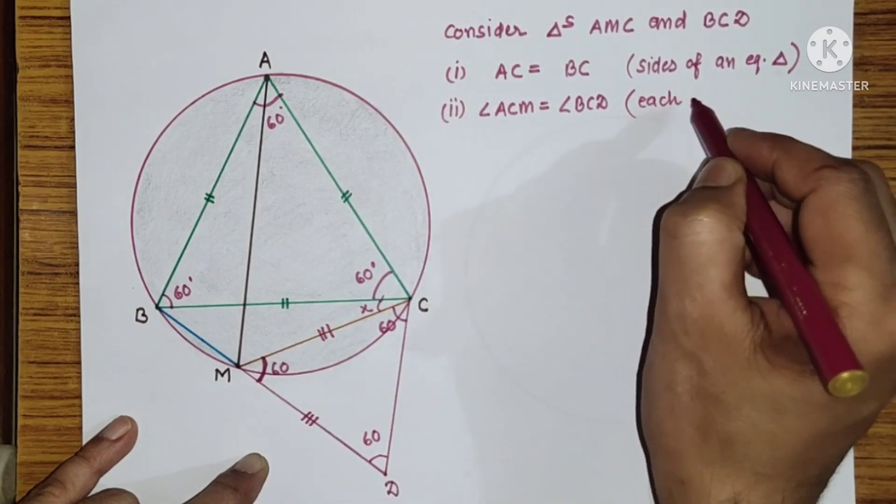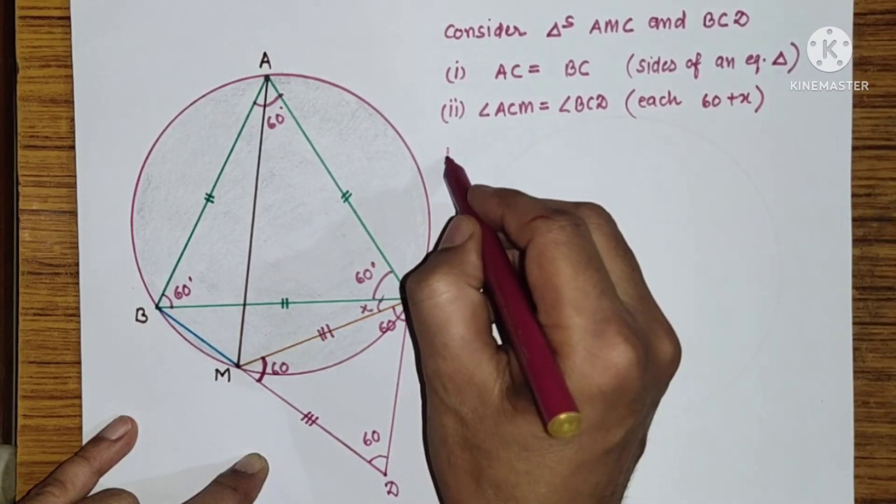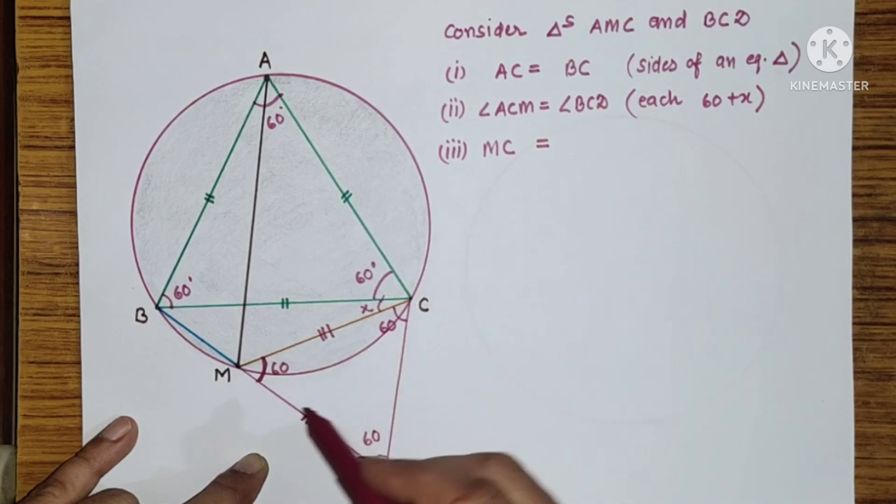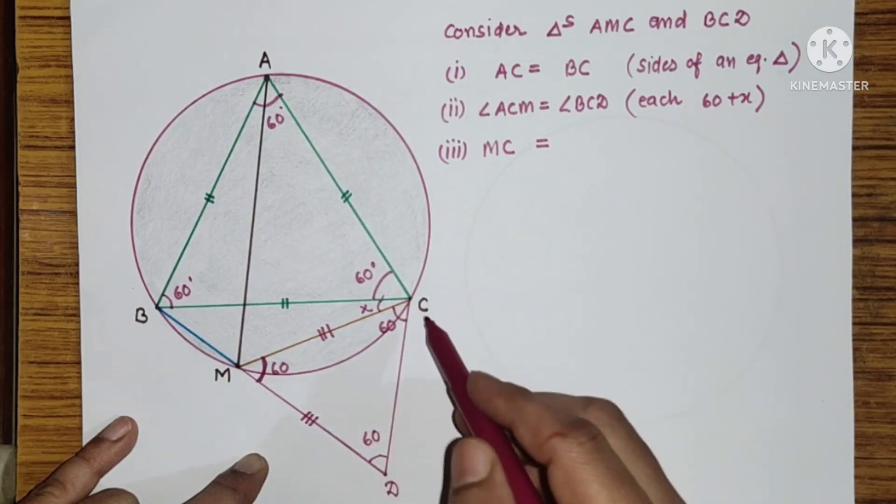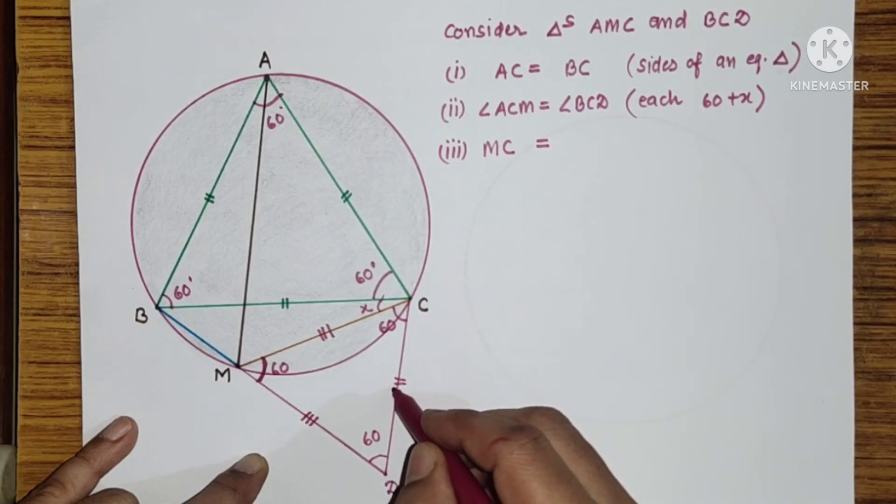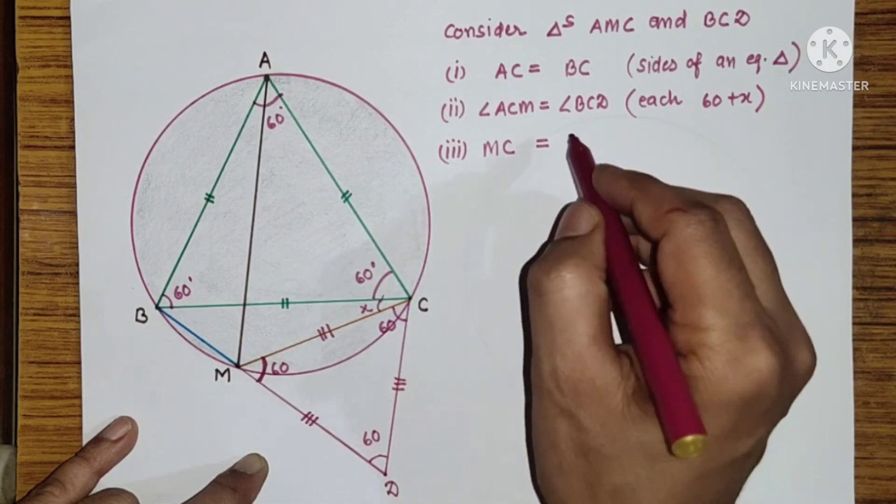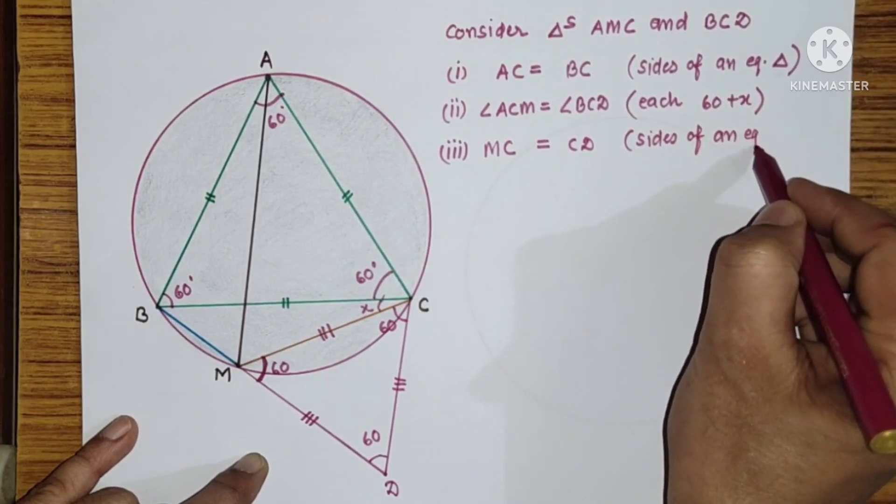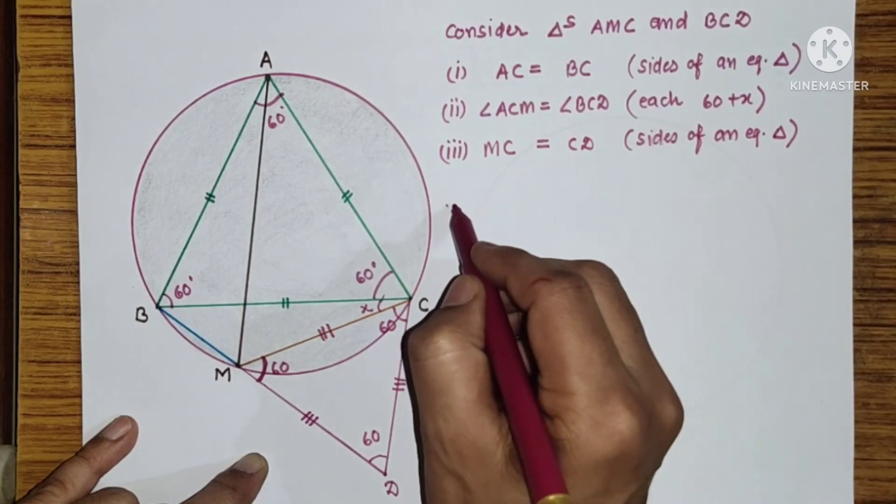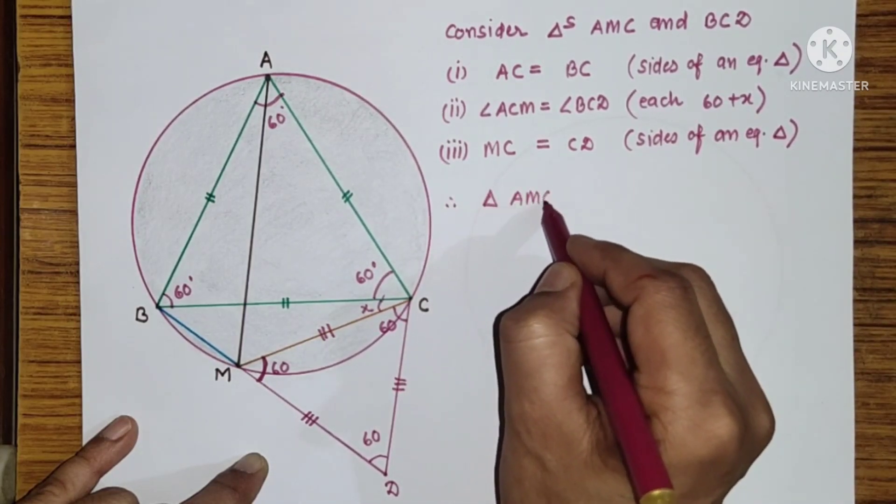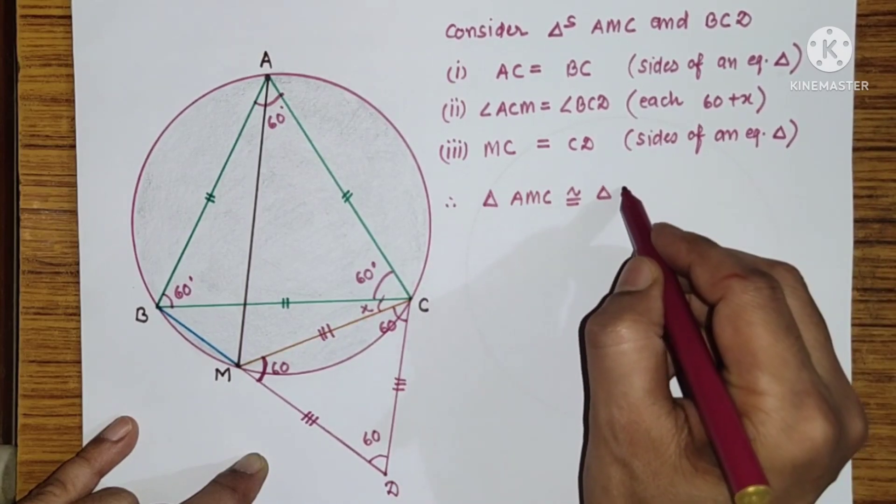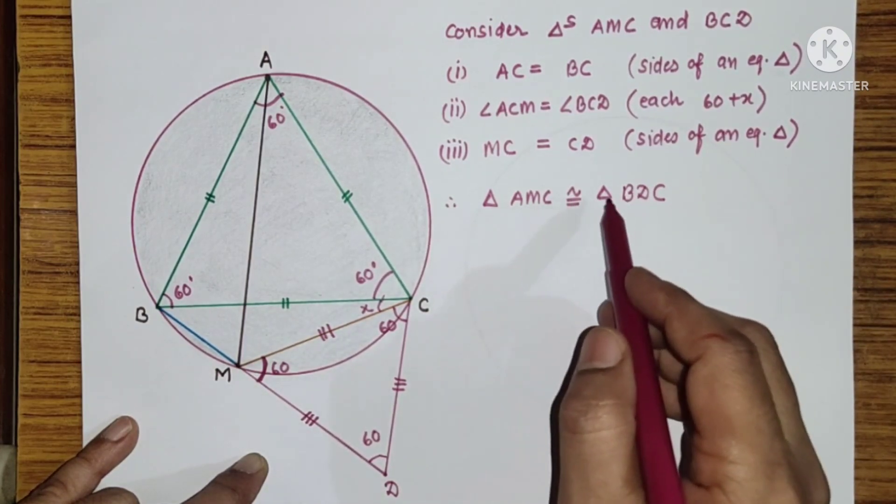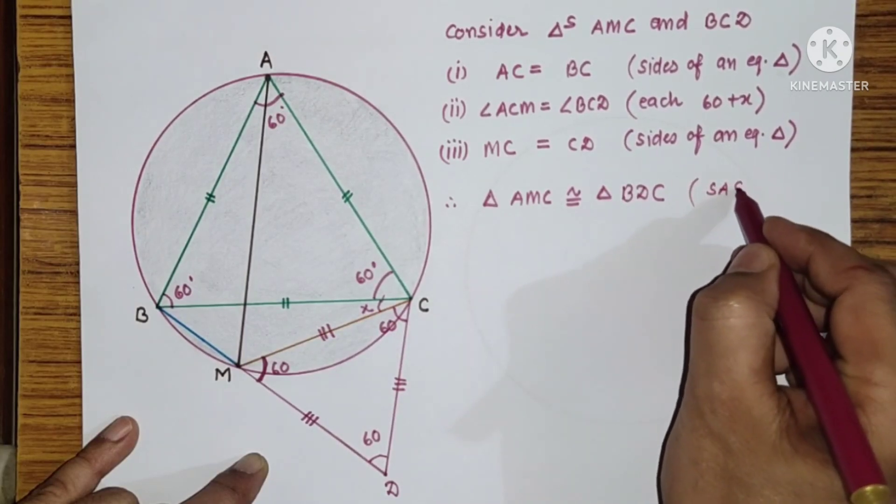So, the reason is each 60 plus X. The third point is MC is equal to CD. Since this is an equilateral triangle, all will be equal. So, MC is equal to CD. Therefore triangle AMC is congruent to triangle BCD by SAS test of congruency.